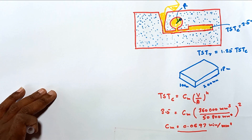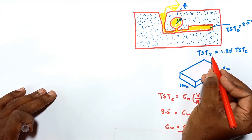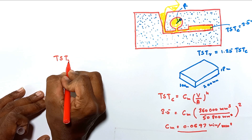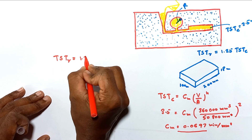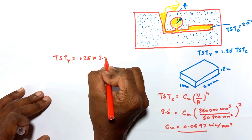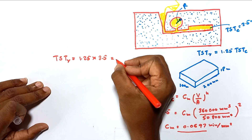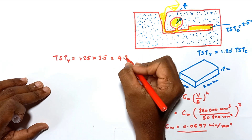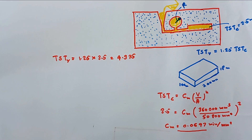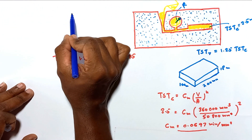Now we are going to determine the r value of the riser. First, we calculate the total solidification time of the riser: it equals 1.25 times the total solidification time of the casting, which is 1.25 times 3.5, giving us 4.375 minutes.